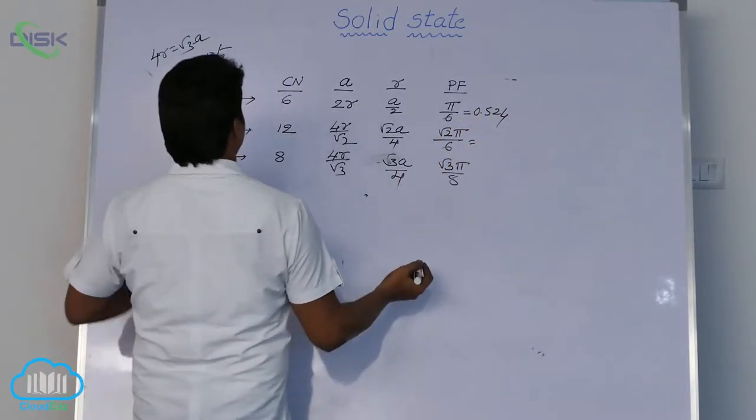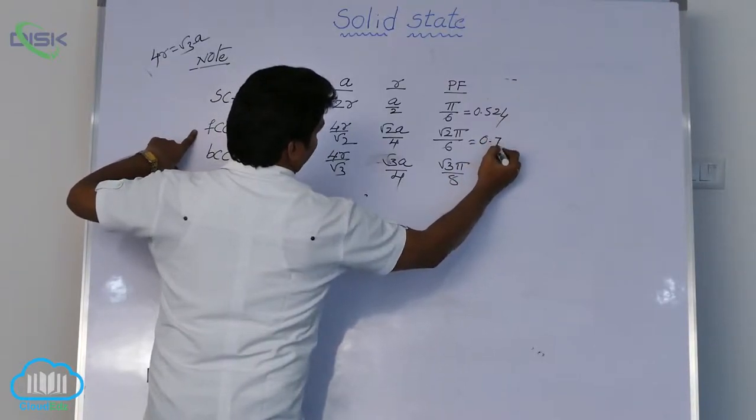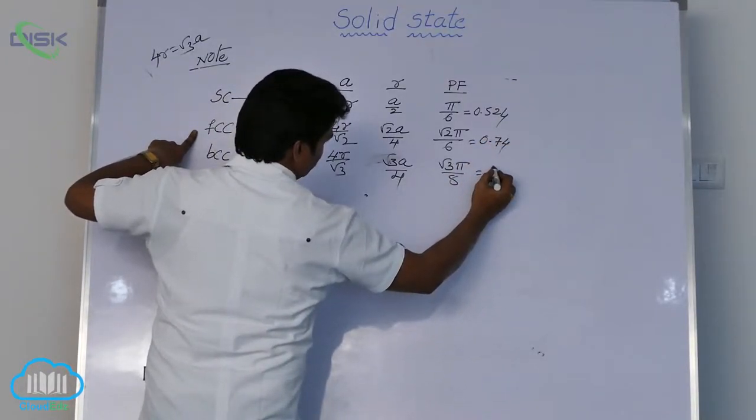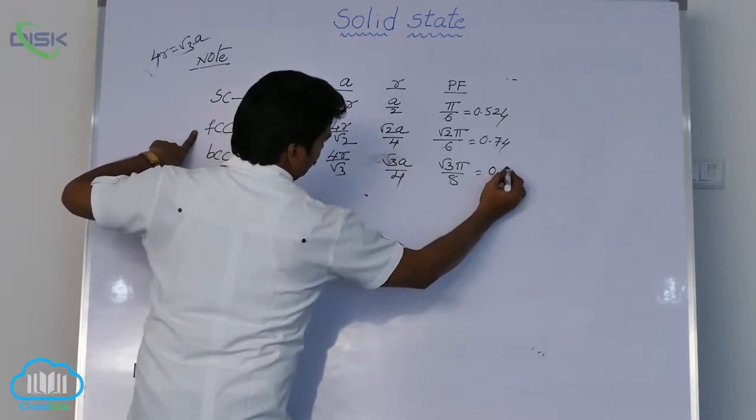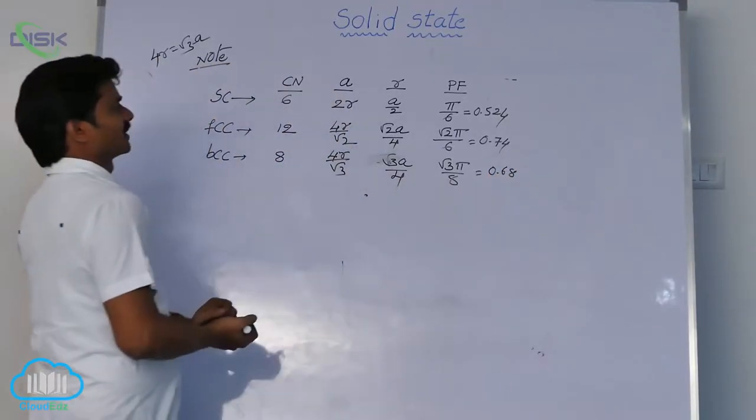In FCC, it is 0.74. And this geometry, in BCC geometry, it is 0.68. This is packing fraction.